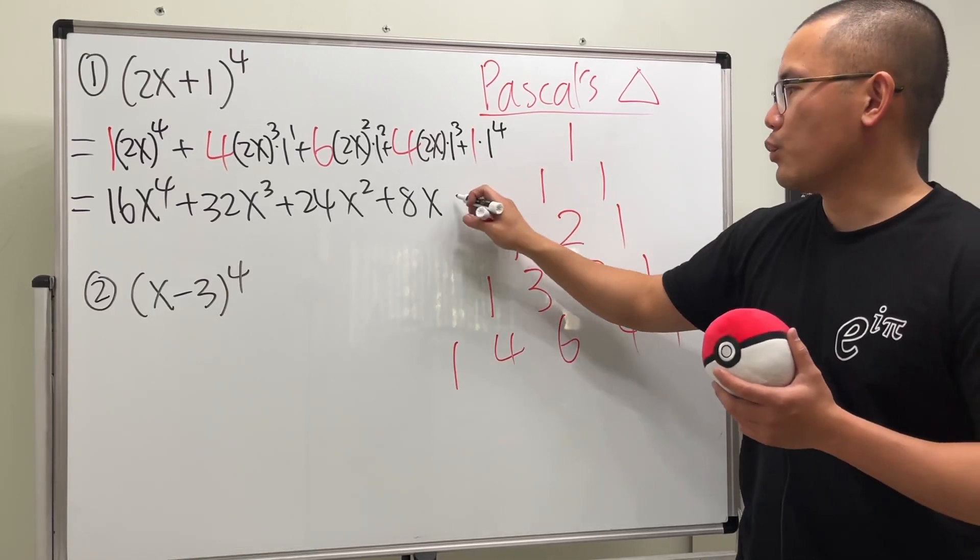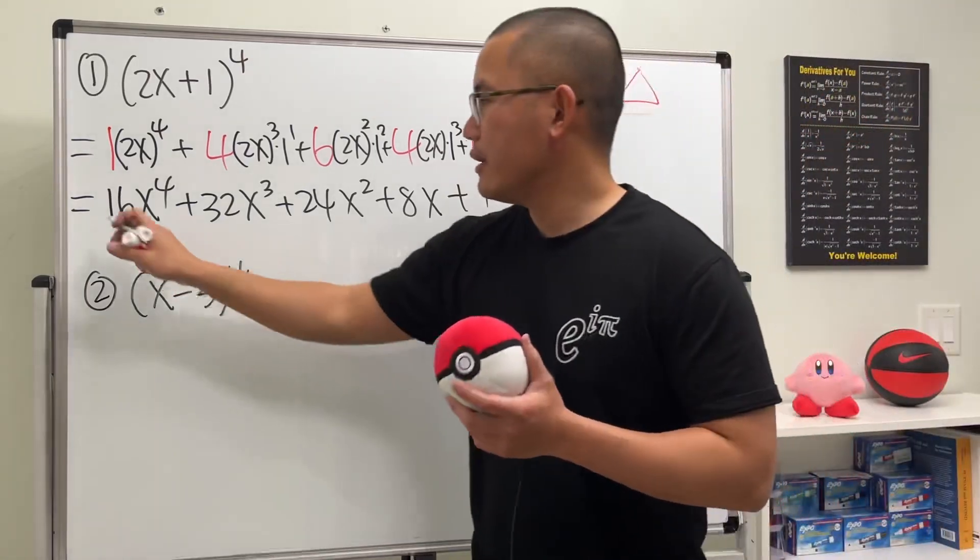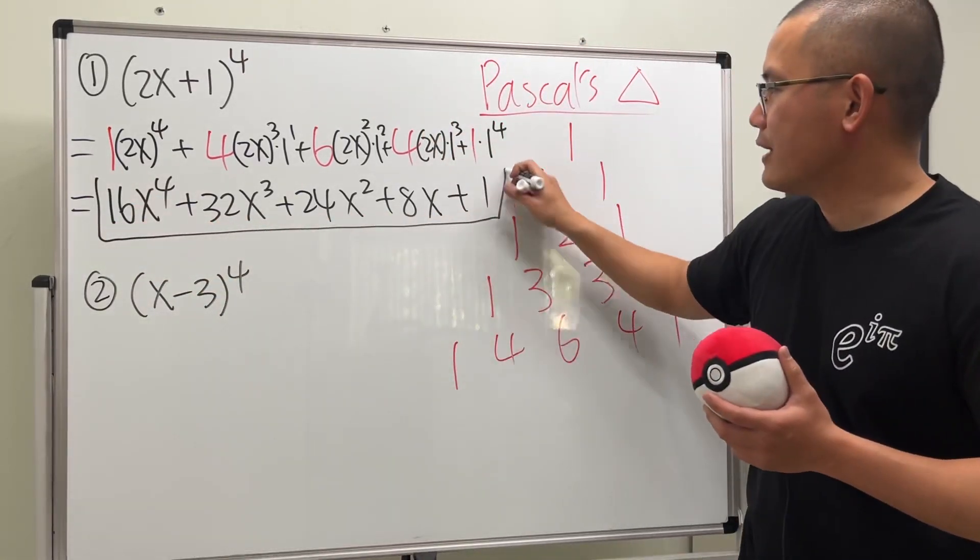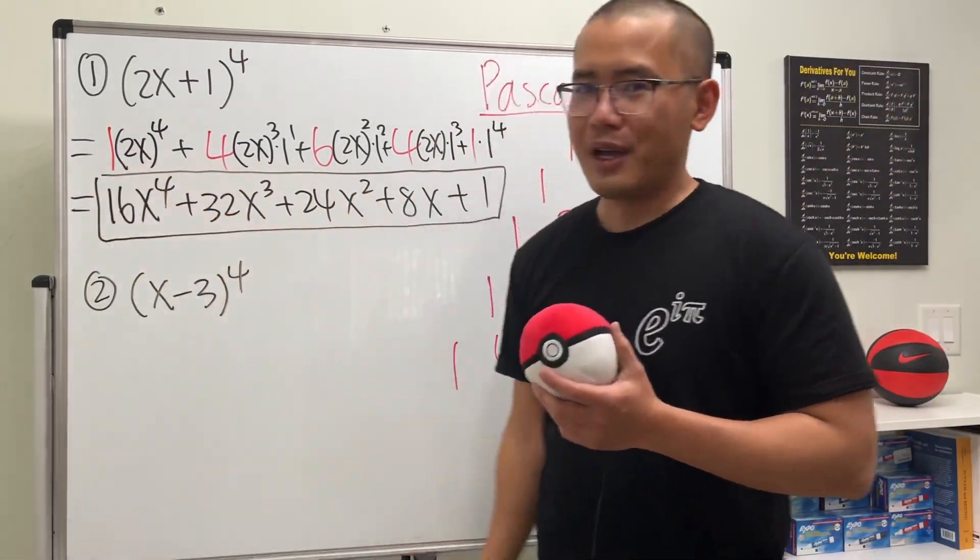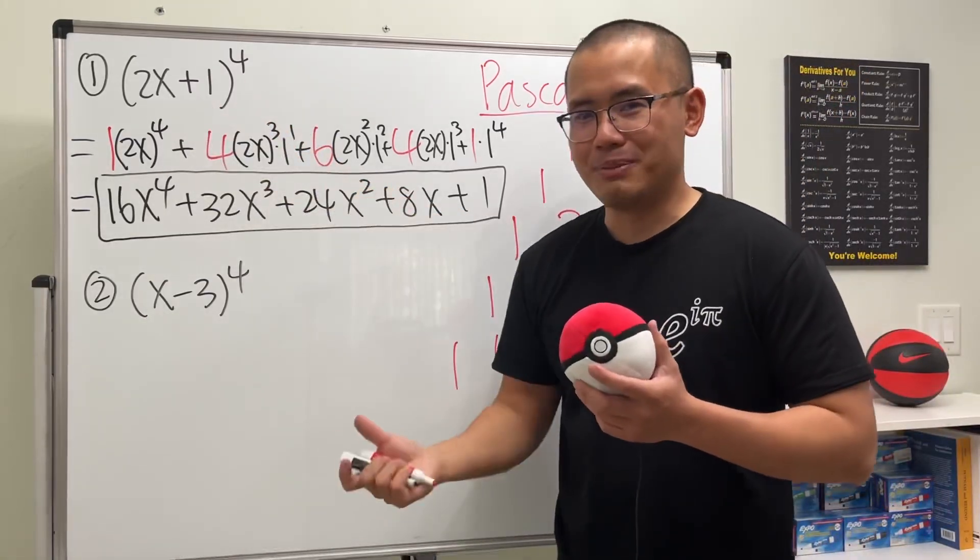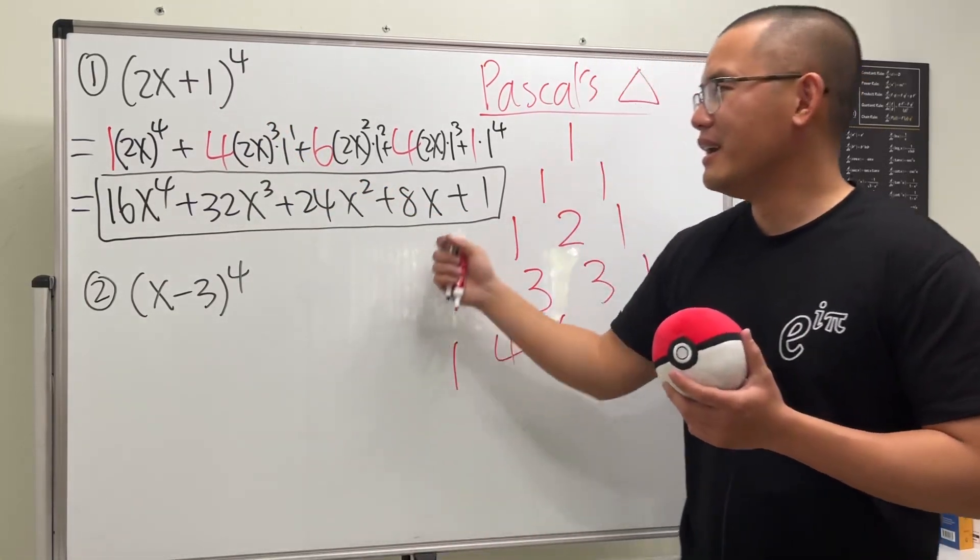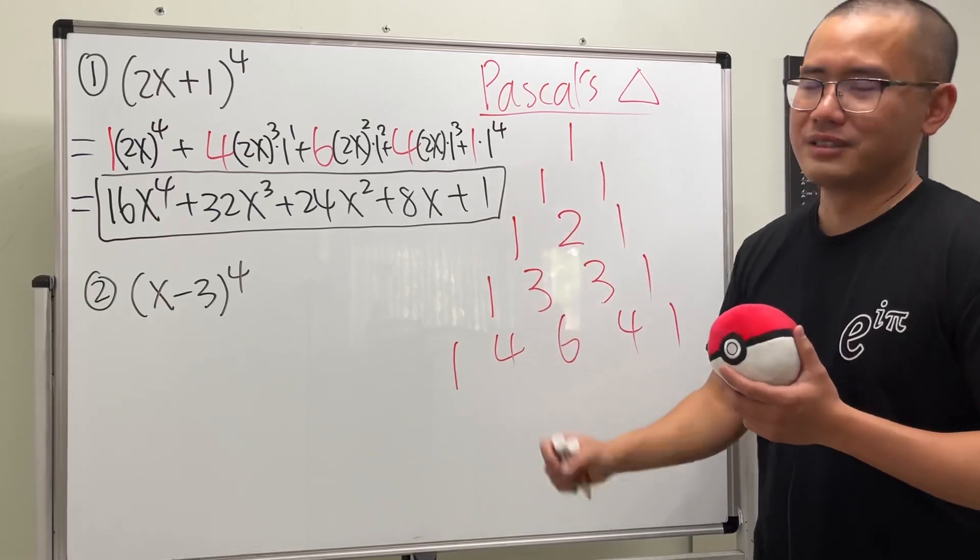And then 2 times 4 is 8x to the first power. And lastly, this is just a 1. So that's it. It's pretty effortless. Especially if you compare this to if you write down 2x plus 1 four times and multiply it. This is definitely more concise.